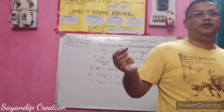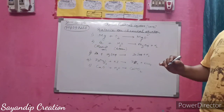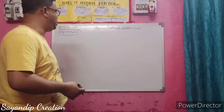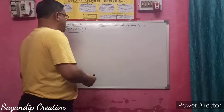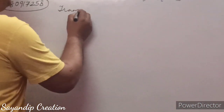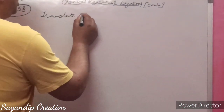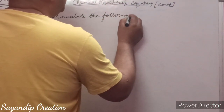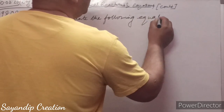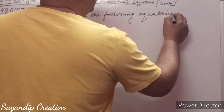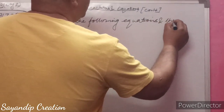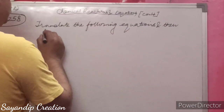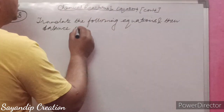Now I will give you some different types of balancing questions — different categories. One type is: translate the following word equations and then balance them.